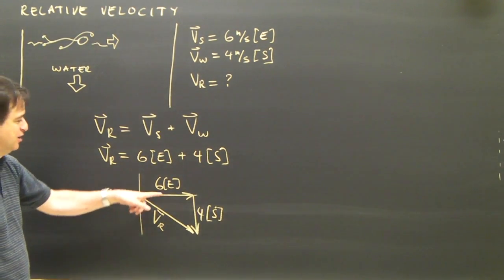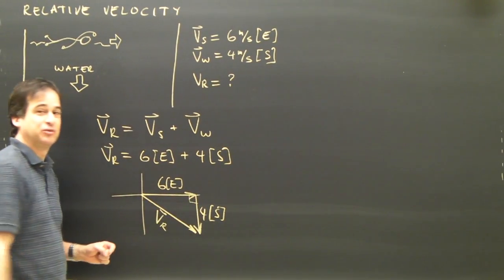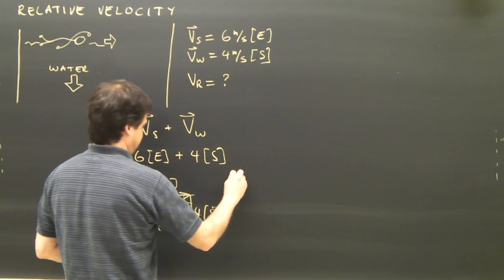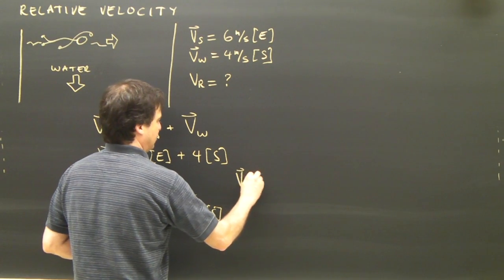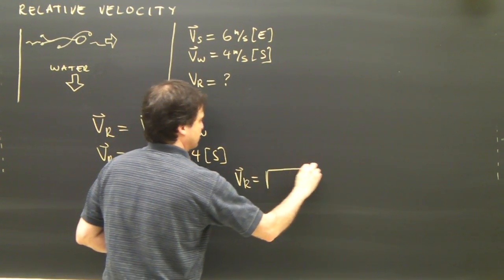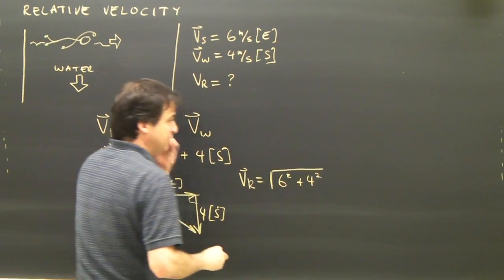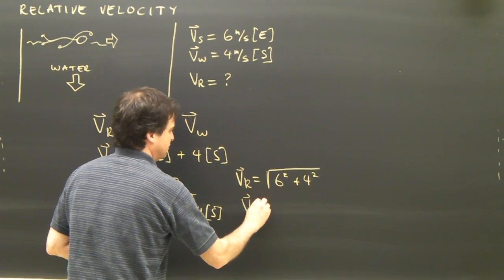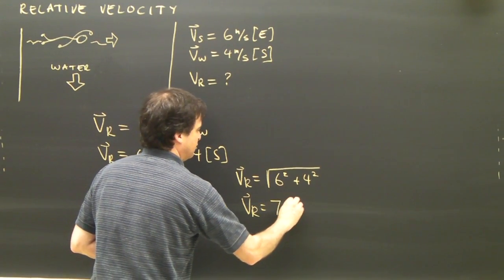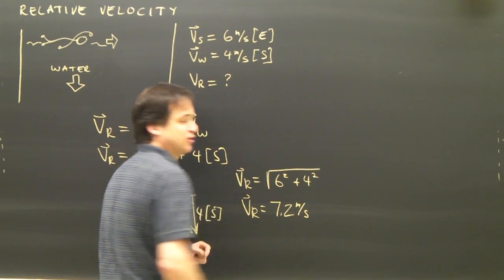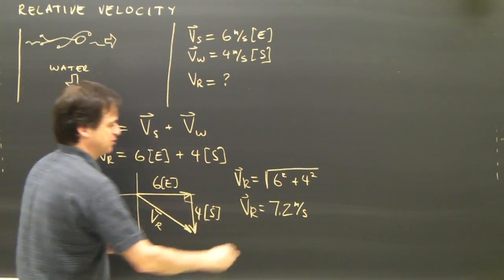So how am I going to find that velocity? Well, this is a right angle triangle, so I use Pythagoras. And I say the result is the square root of 6 squared plus 4 squared. Take the square root and we get Vr is equal to 7.2 meters per second. So there's my resultant.